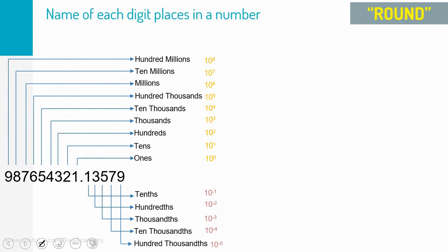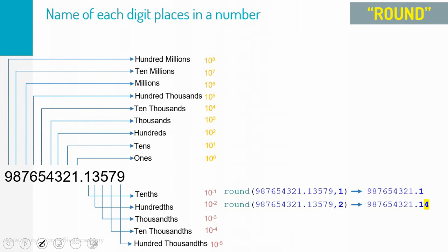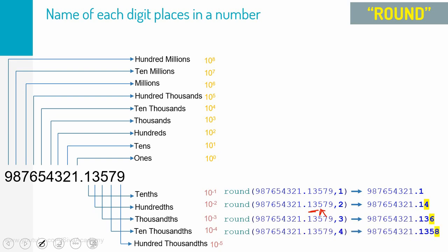Now let us see the same example with the ROUND function. With parameter 1, it rounds to one decimal place. Since the second digit is 3, which is less than 5, the first decimal place stays as 1. When you give 2 as input, it rounds to two decimal places. Since the third decimal digit is greater than or equal to 5, the second decimal position gets incremented. With parameter 3, we get the number rounded to three decimal places; since the fourth digit is 7, rounding occurs. With parameter 4, since the fifth digit is 9, rounding occurs. With parameter 5, nothing gets rounded since there are only 5 decimal digits.